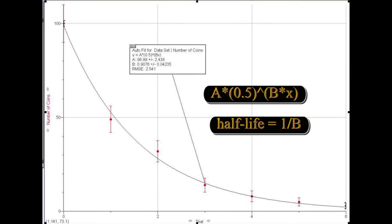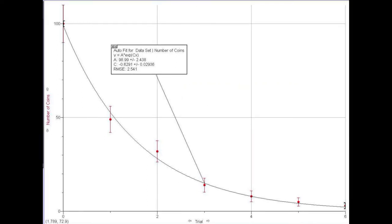Fit a function of the form a times 0.5 raised to the b times x. The inverse of b is the half-life. Now fit an exponential curve to the same data. From this fit, you can determine lambda, the decay constant.